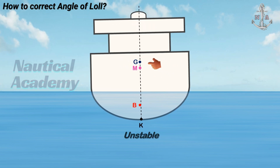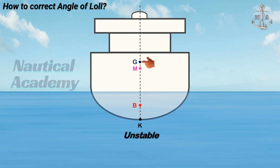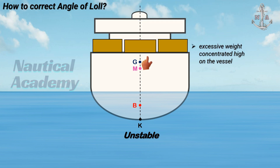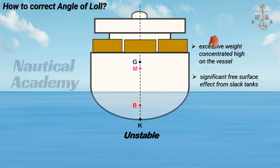There are several reasons why a ship's center of gravity can rise above the metacenter. The key point to remember is that excessive weight concentrated high on the vessel, or a significant free surface effect from slack tanks, can cause a rise in the ship's G. I've already covered this topic in a separate video. If you're interested in a full explanation, including a detailed discussion on the angle of loll, you can find the link in the description or in the comment section.